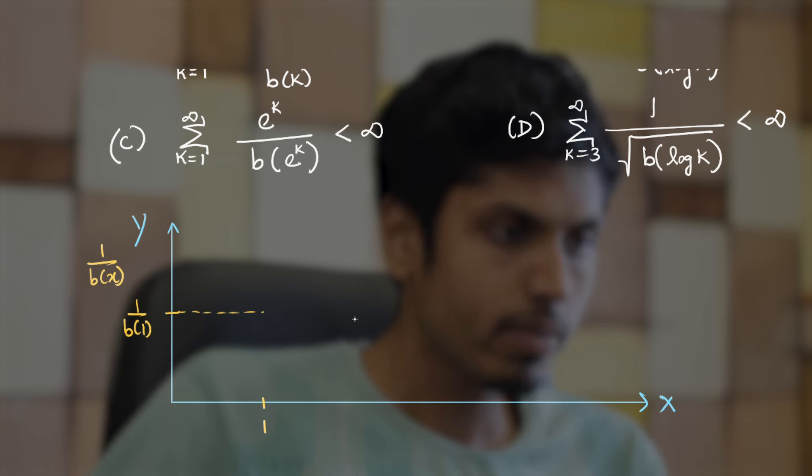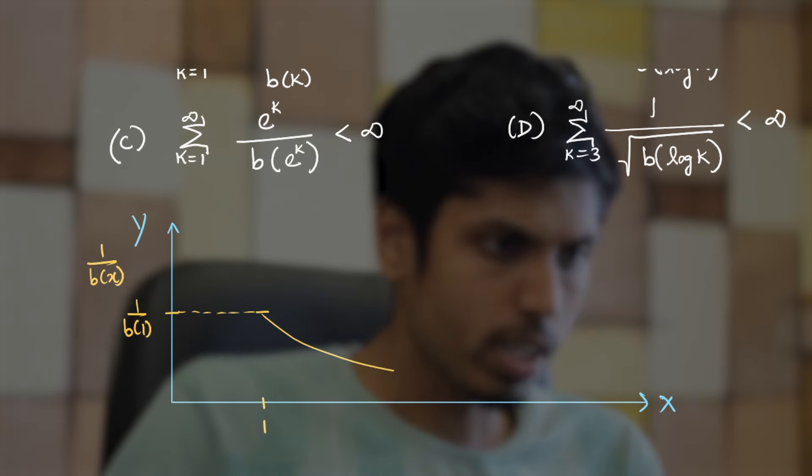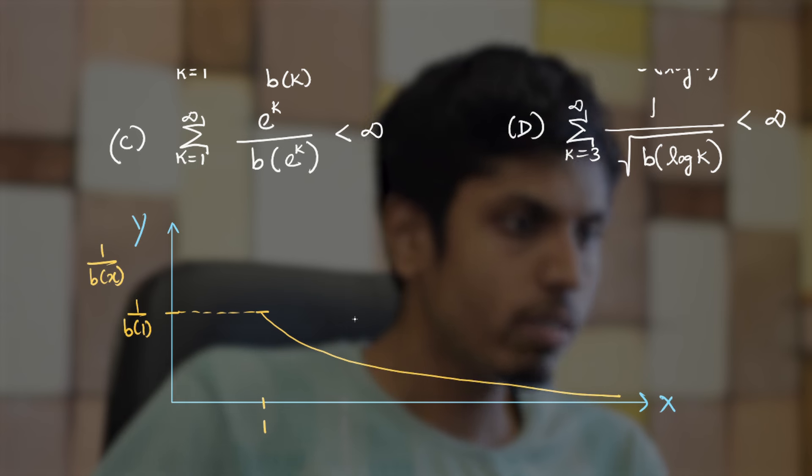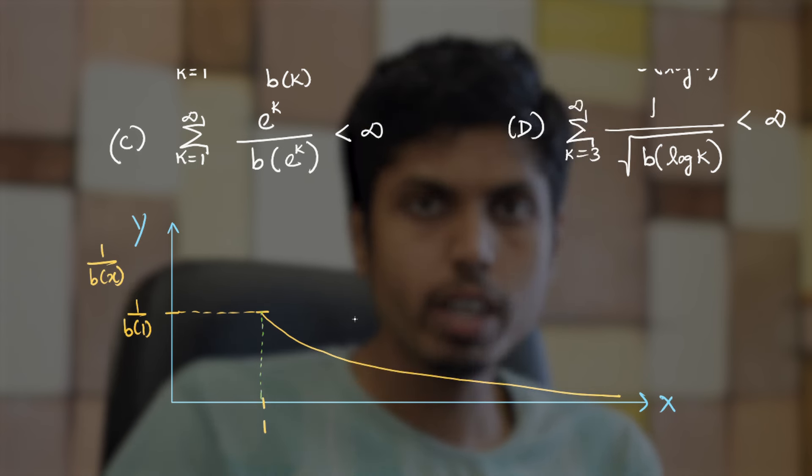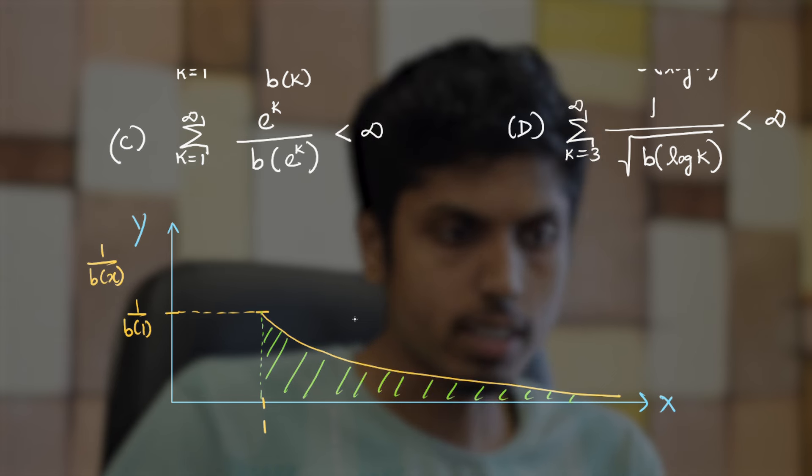Recall that b is increasing which means that 1/b(x) is decreasing. So, it looks something like this. And we are also given that the integral from 1 to infinity converges, which means that the area under the graph is finite. From this, we can tell that considering the integers 1, 2, 3, 4...